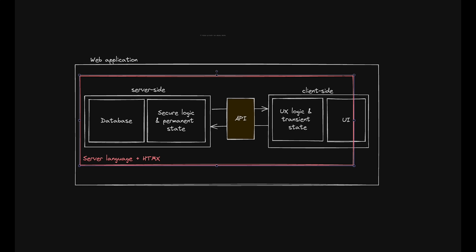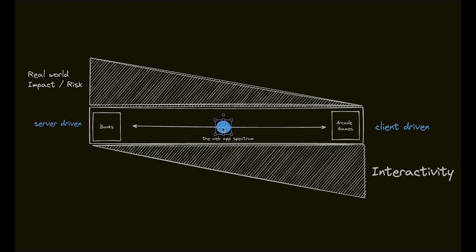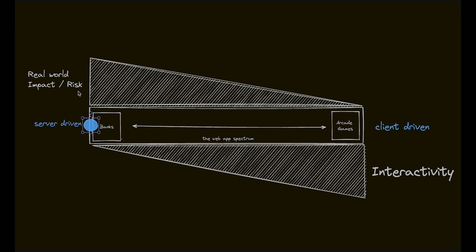HTMX extends the domain of back-end developers into front-end territory. The fundamental question of who might profit from using HTMX comes down to two things: first, where should your state live, and how much do you trust your users? Web applications live on a spectrum ranging from banks on one end to arcade games on the other. An arcade game's state is complex, changes quickly, and has no real-world implications, so it lives on the client. For applications with client-side state and logic, it makes sense to use a client-side framework.